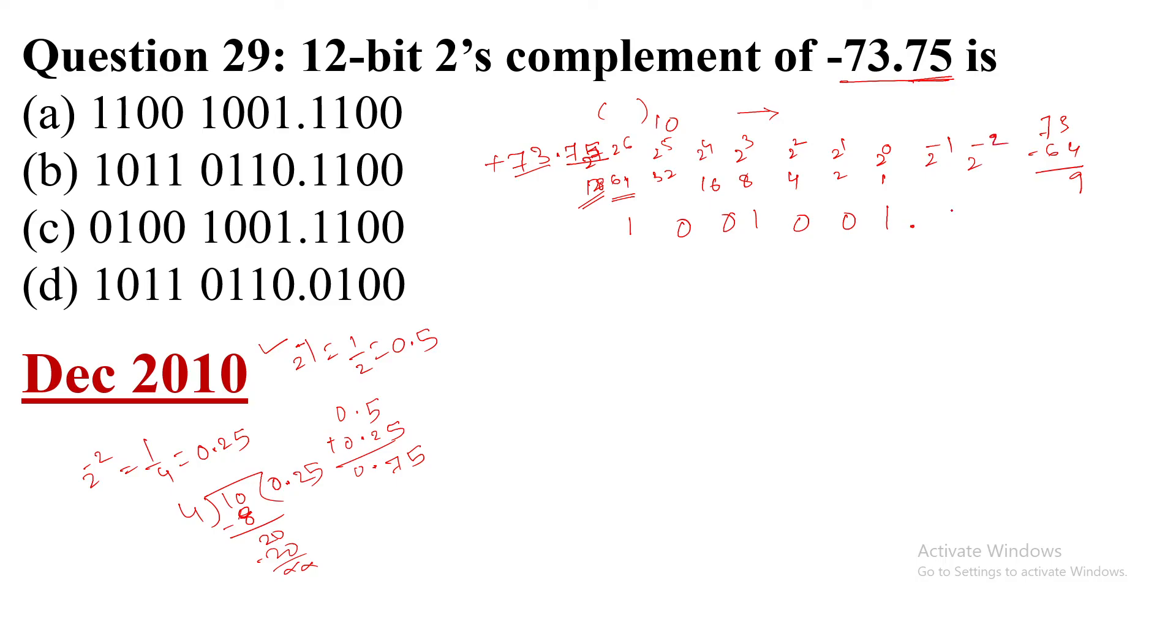Now if you add it, 0.5 plus 0.25, then it will come 0.75. So that is 2's power minus 1 and 2's power minus 2. At these two places we will put 1, 1. This is the positive number plus 73.75. If we need the sign, that time we require one more bit. This is for the sign but put 0.